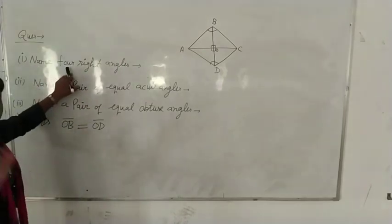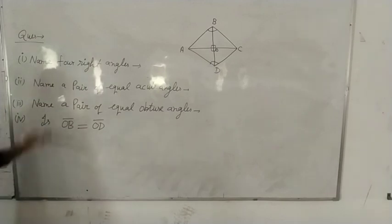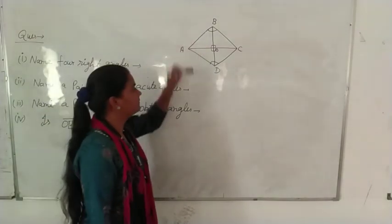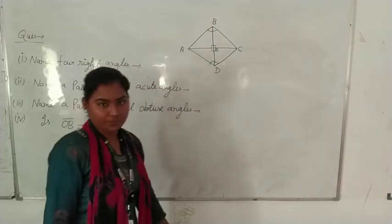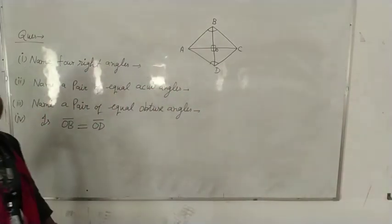Here we have one example. We have a rhombus AECB. In this, two diagonals AC and BD intersect at O. Following questions are here.